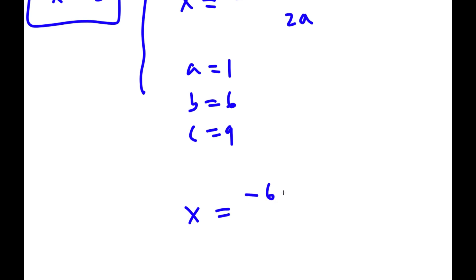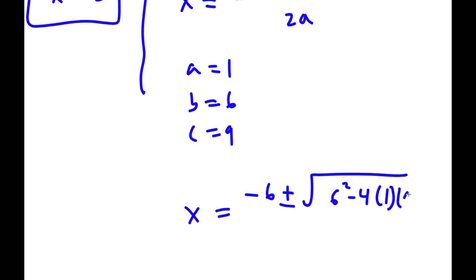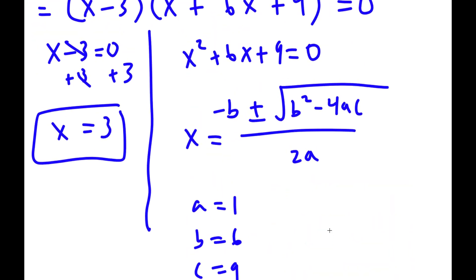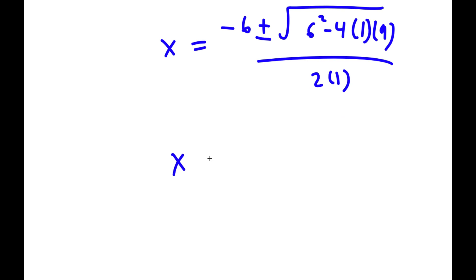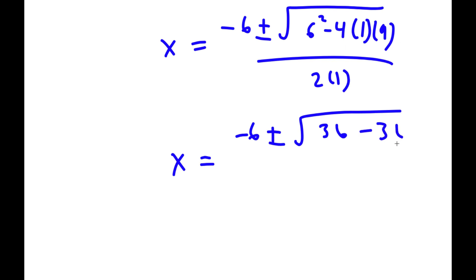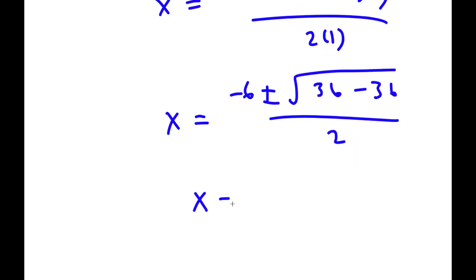So now I have x is equal to negative 6 plus or minus the square root of 6 squared minus 4 times 1 times 9, all over 2a. To simplify, 6 squared is 36 minus 4 times 9 is 36, all over 2. And now this is equal to negative 6 plus or minus the square root of 36 minus 36, which is 0, and the square root of 0 is 0, all over 2.